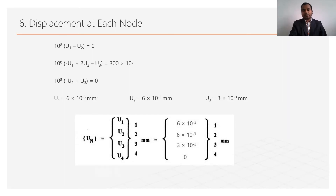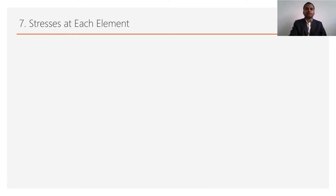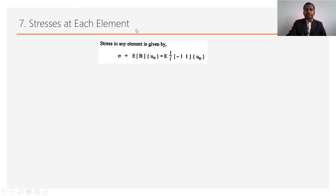We write the complete displacement matrix with the calculated values of u1, u2, u3, and u4 = 0. Next, we need to find the stresses at each element. To find stress, we use the equation: σ = E × B × u, where the strain matrix B = (1/L) × [-1, 1], and the displacement matrix contains the nodal displacements for that element.